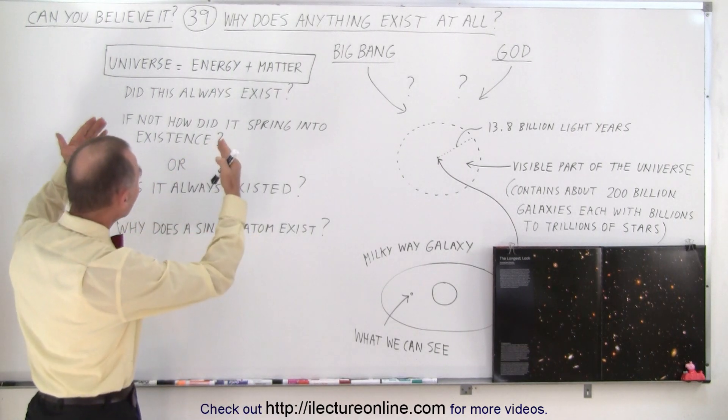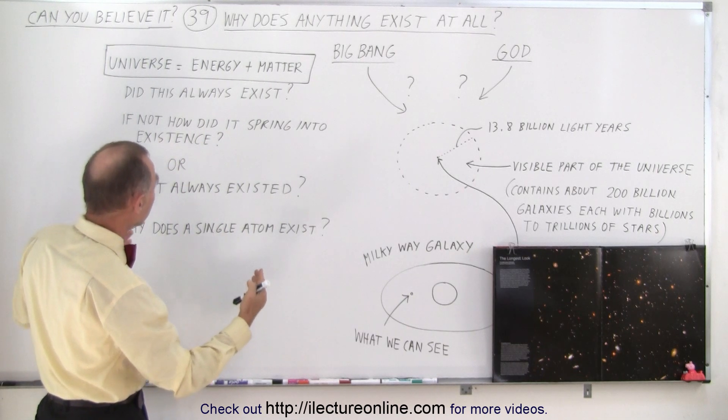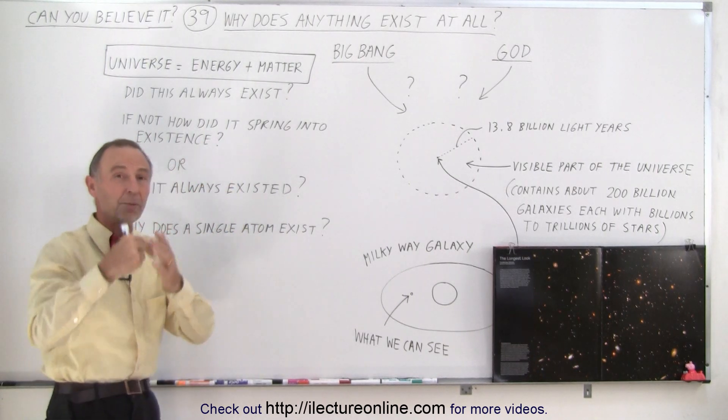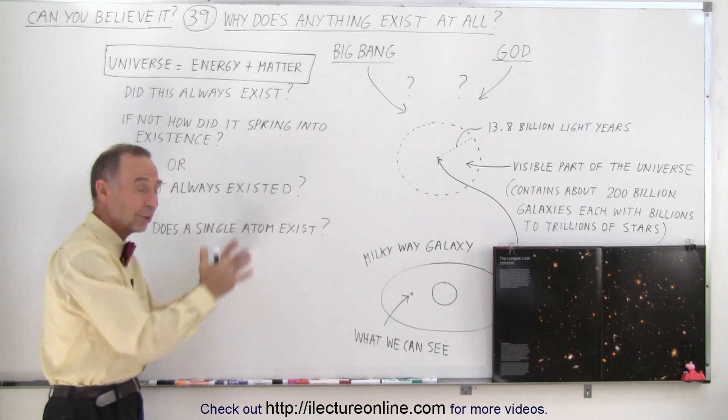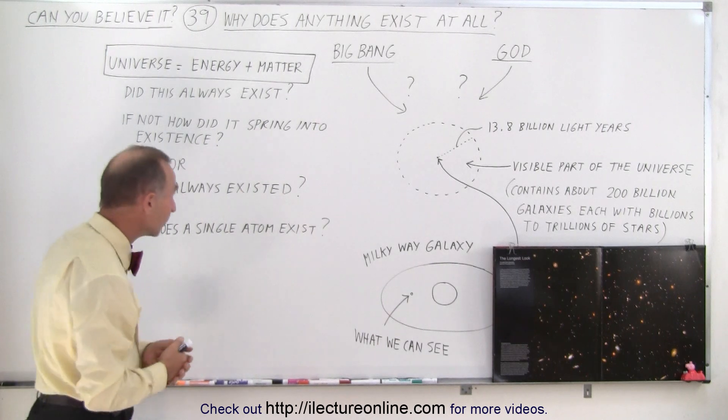So the universe is essentially energy and matter. Did it always exist? Did it spring into existence at some moment in time, like in the Big Bang 13.8 billion years ago? Was that an event that's happened over and over again? We don't know.